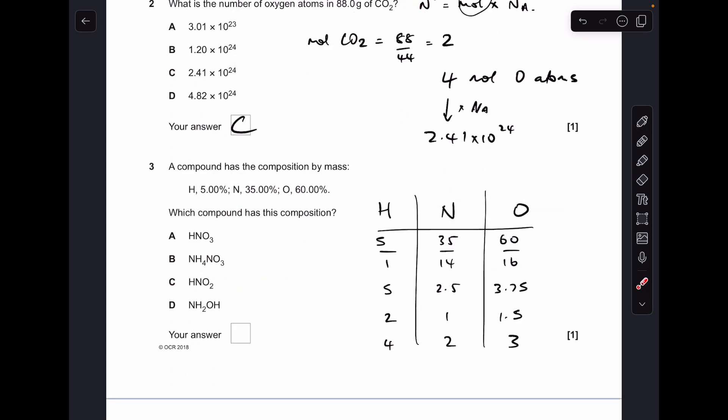Question 3, pretty straightforward empirical formula calculation, so we'll put our percentages in first, divide by the relative atomic mass, that gives us the moles. So we divide by the smallest, which is obviously the 2.5, and we get the ratio, but then because we've got this 1.5, we need to multiply out, so we'll multiply everything by 2, and we get a ratio of 4 to 2 to 3 for the hydrogen, nitrogen, oxygen. So which of these has that ratio? It's option B.